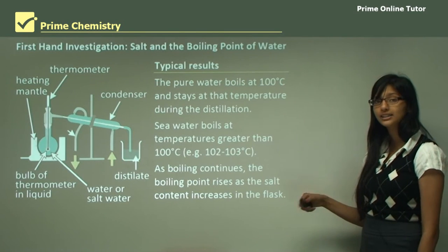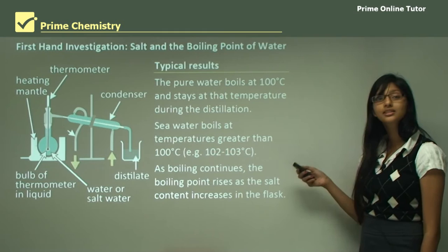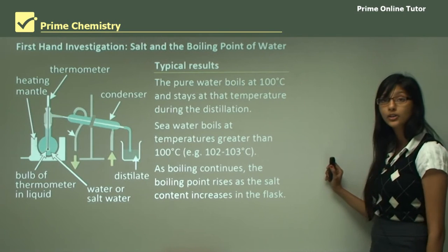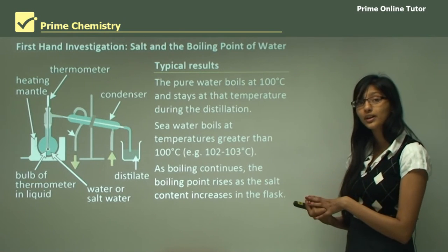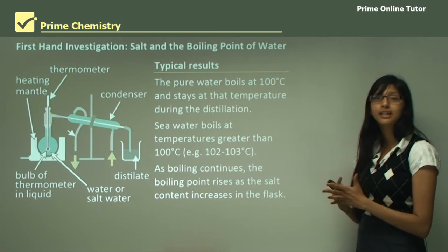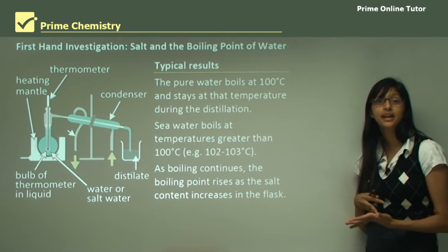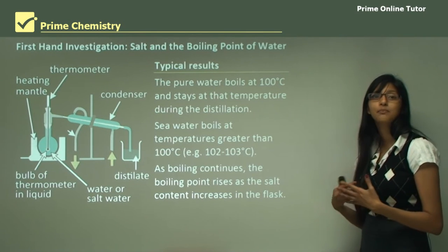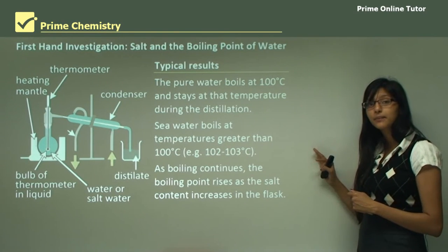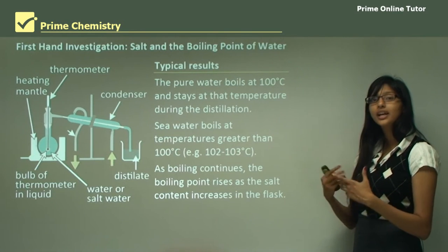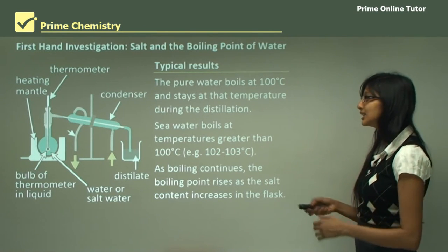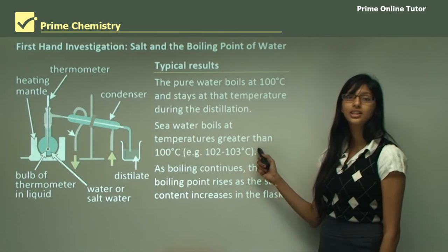With this first-hand investigation you can conclude that when you add salt to water, it increases the boiling point of water. If our hypothesis was whether salt affects the boiling point of water, the answer is yes — by conducting the experiment we saw that adding salt increases the boiling point, so the boiling point of water will be greater than 100°C, around 102 to 103°C.